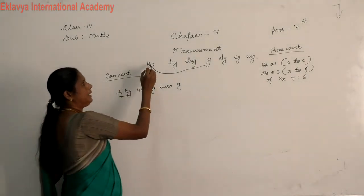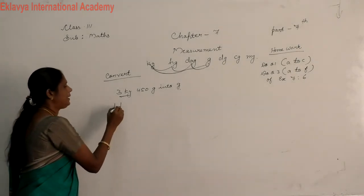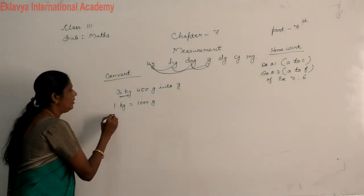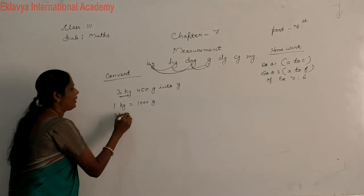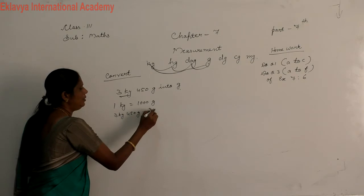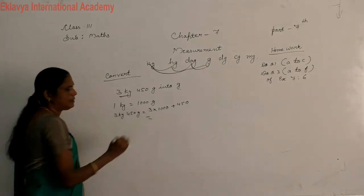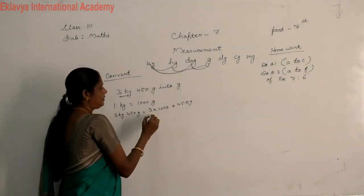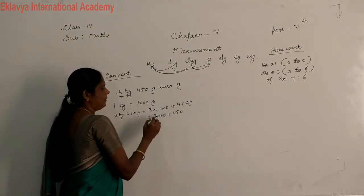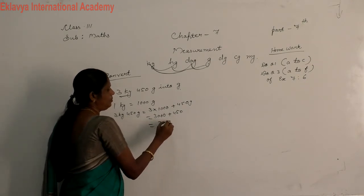Multiply by 10, 100, 1000. We multiply by 1000. Then 1 kg is equal to 1000 gram. Then 3 kg 450 gram is equal to 3000 plus 450. Then you add this number. Then 3,450 gram.